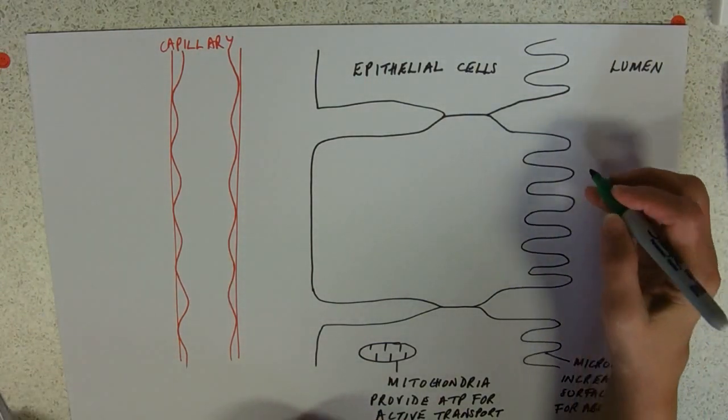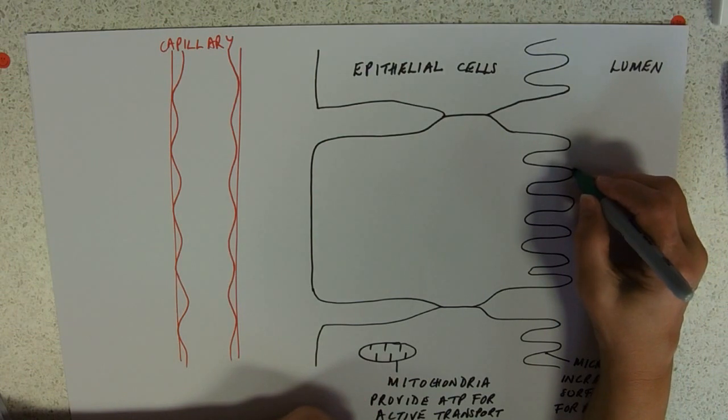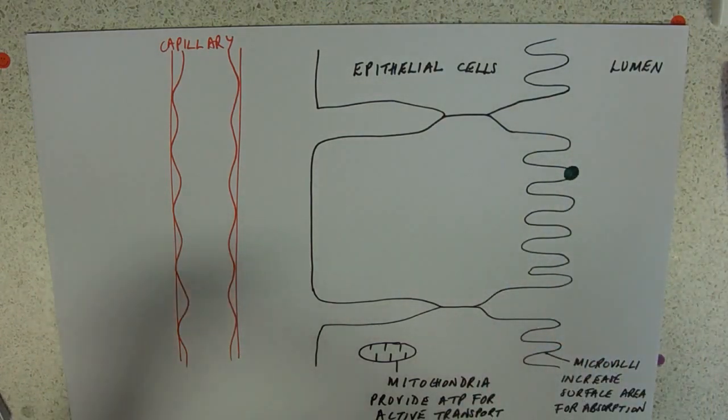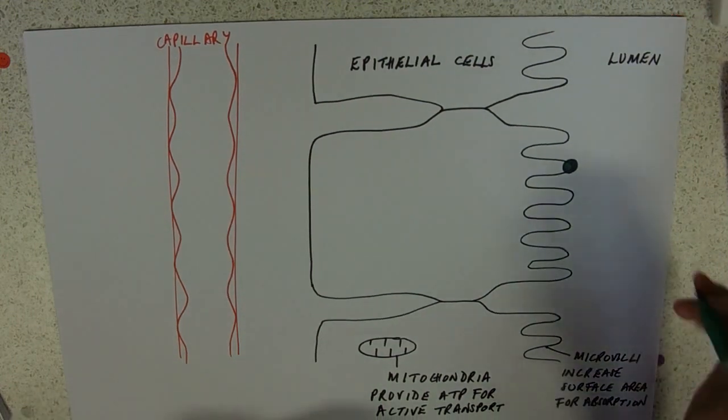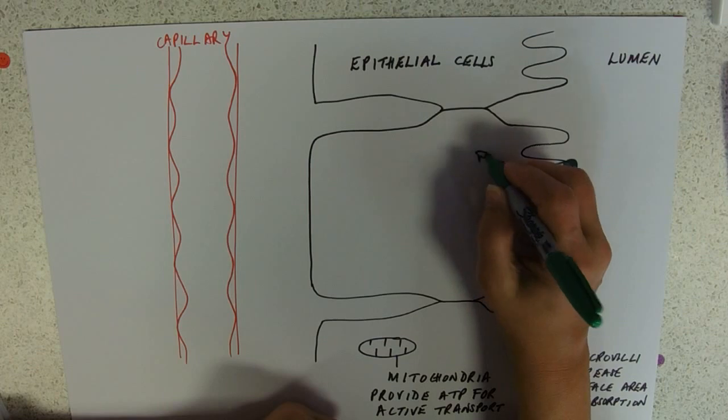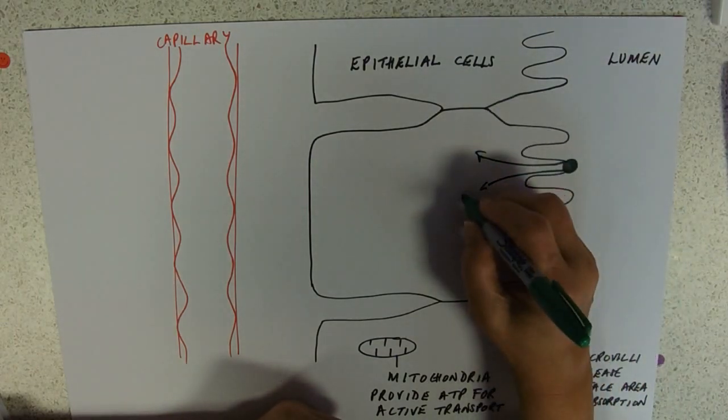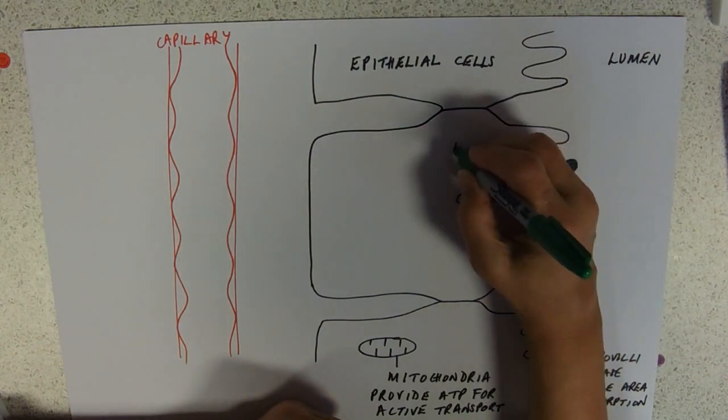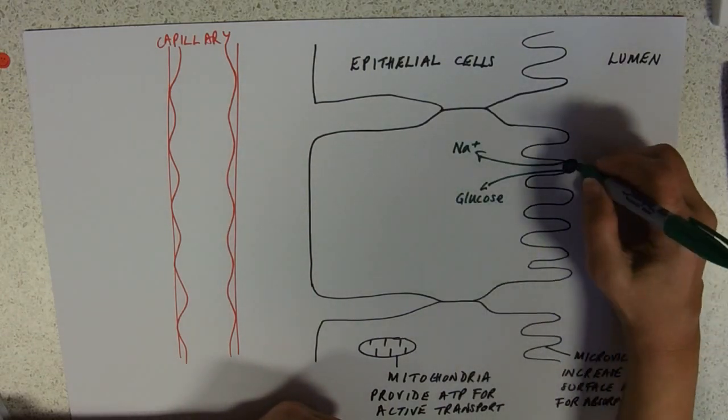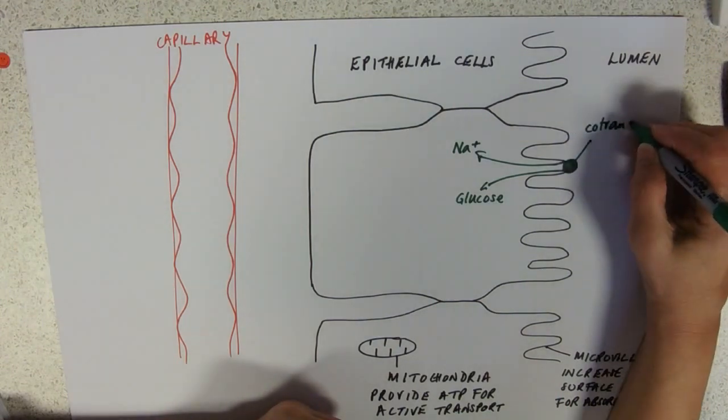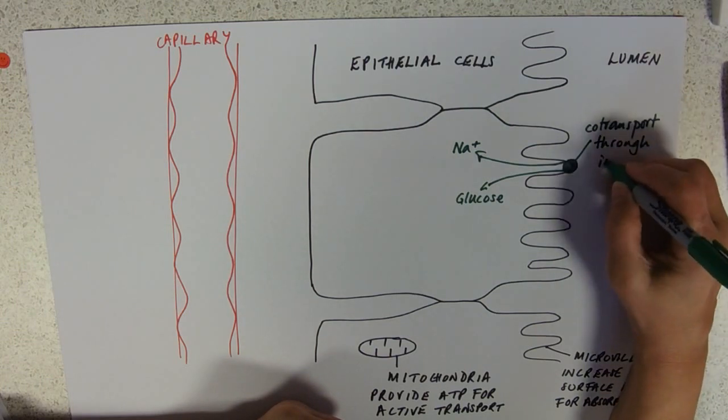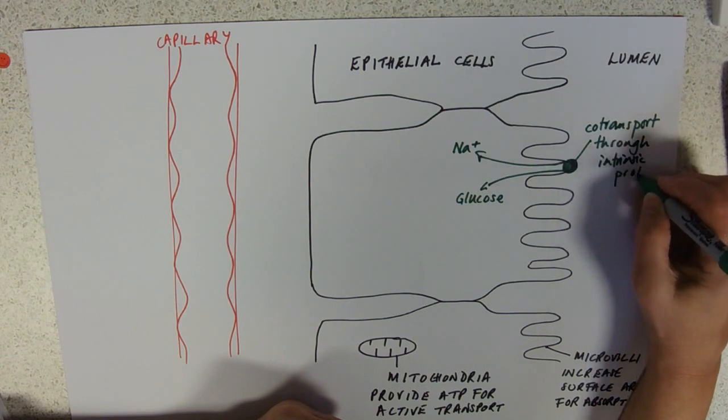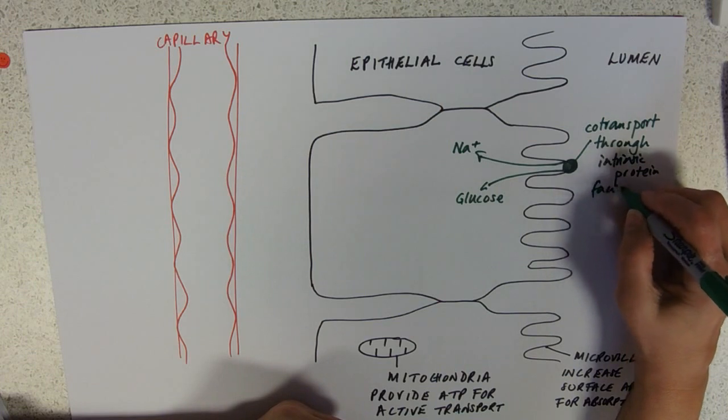So in the, to do absorption, obviously you're going to need some protein carriers. So this is my protein carrier here, and the main thing that we're going to be absorbing, because the key component of your diet, these sort of staple foodstuffs are all starch based, is going to be glucose. So glucose, as you recall from selective reabsorption, is co-transported into this cell with sodium ions. So this is co-transport through an intrinsic protein, and we're talking therefore facilitated diffusion.